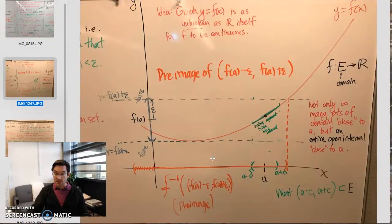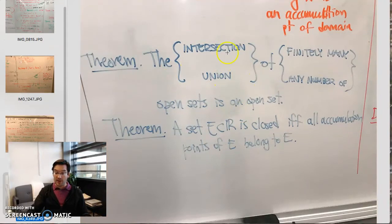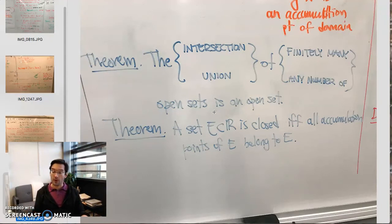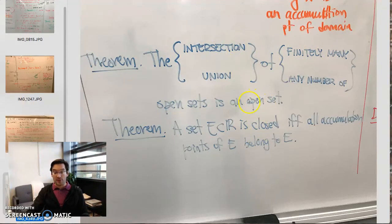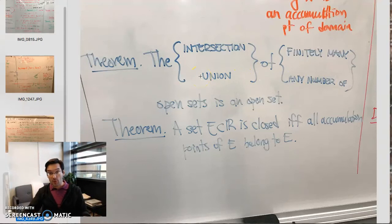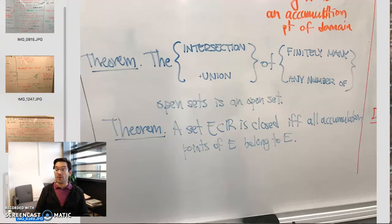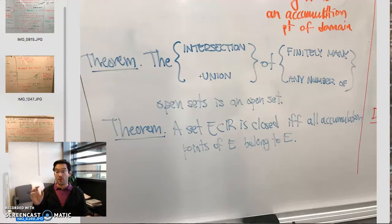The relationships between openness and closeness can be captured in a couple of theorems. First, if we take finitely many open sets and intersect them, the result is an open set. Second, if we take any number of open sets and take their union, we also get an open set. So we can create new open sets by taking finite intersections or unions of arbitrarily many open sets.